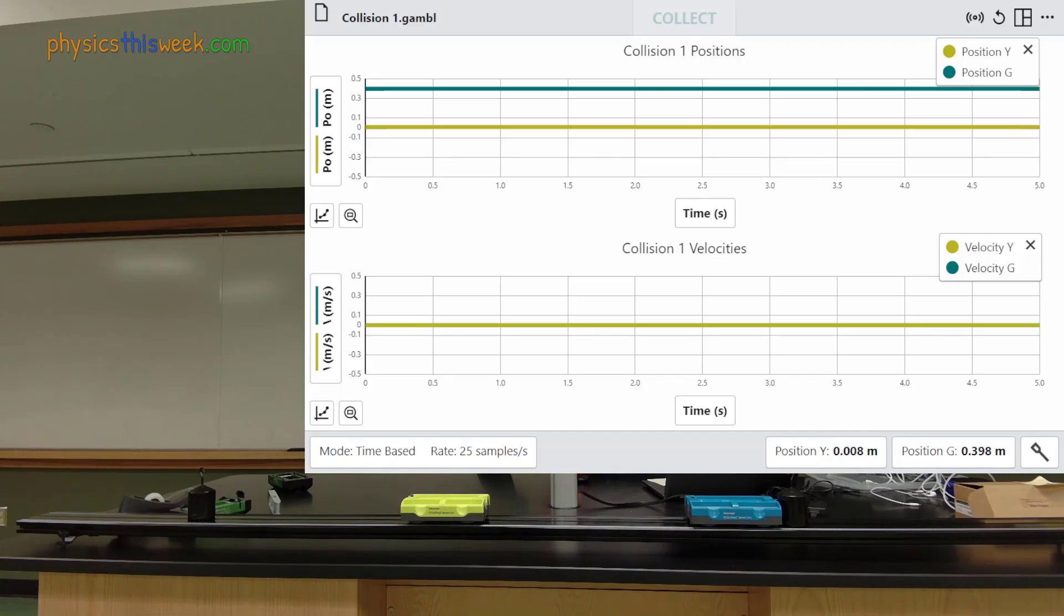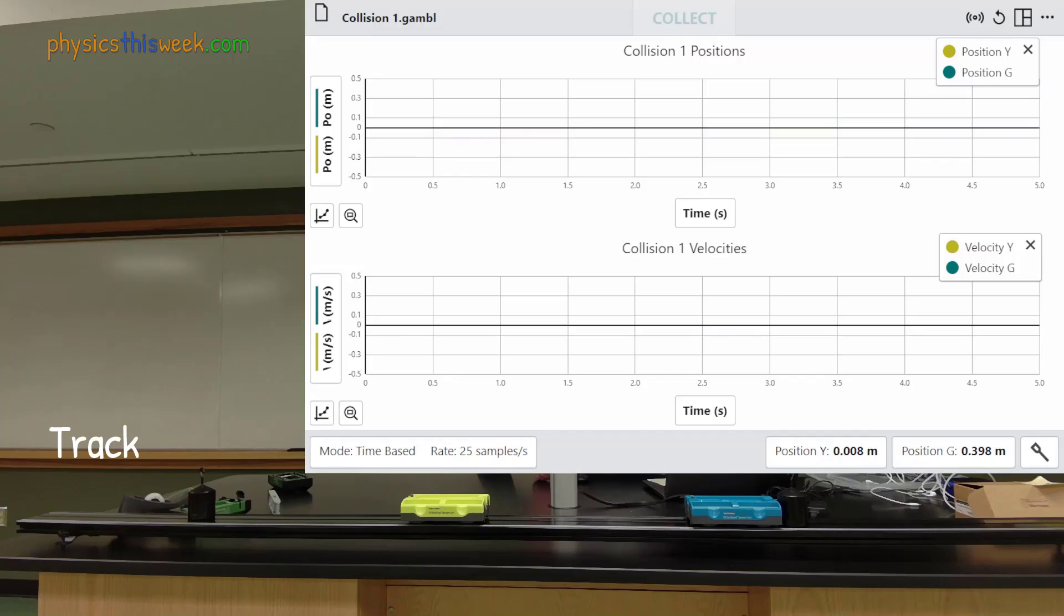This video describes the data collection process for the Momentum Lab. Our setup consists of a linear track, two Vernier GoMotion carts, and a computer with Vernier graphical analysis software.